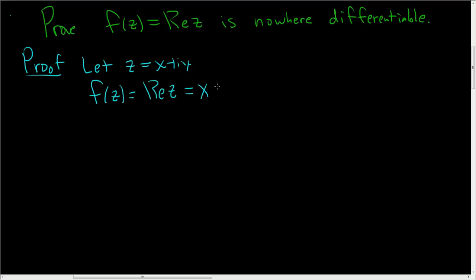Now, we need to identify u and v to use the Cauchy-Riemann equations. So I'm going to write this as x plus 0i. Okay, so now it's pretty easy to see what u is. So set u of x, y equal to x and v of x, y equal to 0.